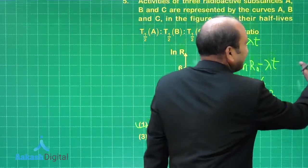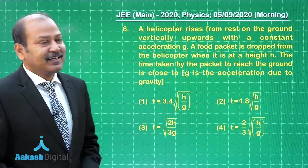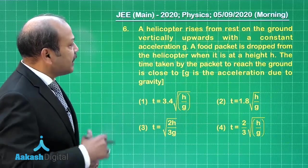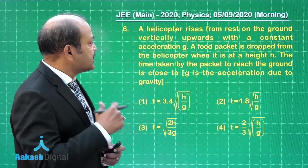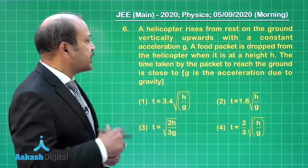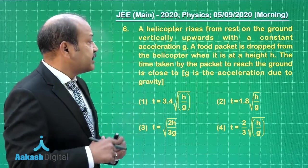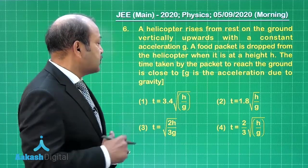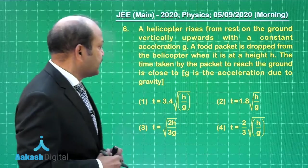Let us slide it back and now go to question number 6. Question 6 says a helicopter rises from rest on the ground vertically upwards with a constant acceleration g. A food packet is dropped from the helicopter when it is at a height h. The time taken by the packet to reach the ground is close to, g is the acceleration due to gravity.